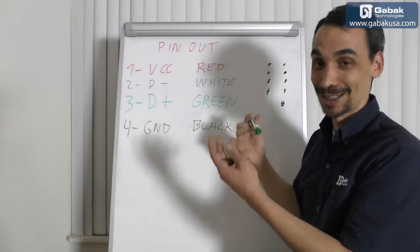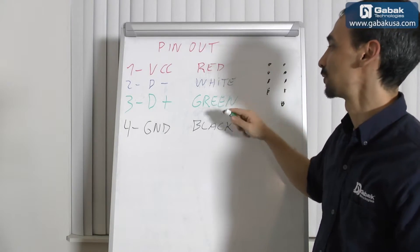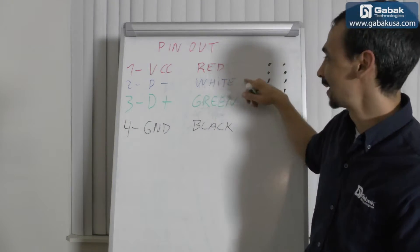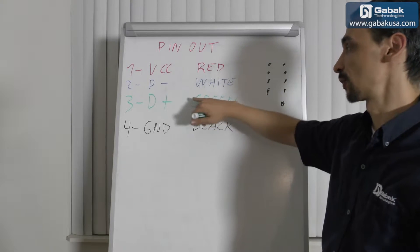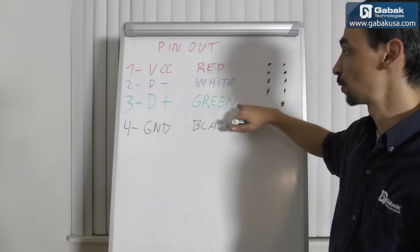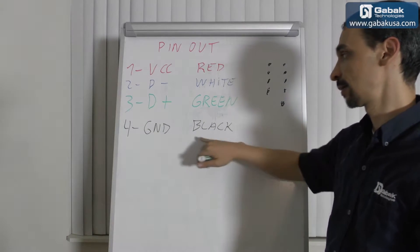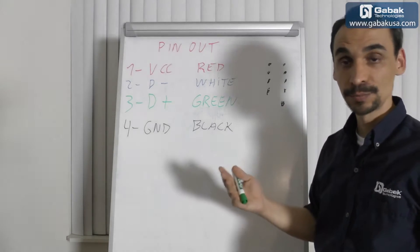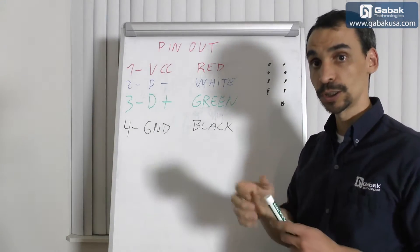Then you have the white one. I don't have a white marker and the whiteboard is white, so of course I cannot use something like that. But this is for the data, and then for the other cable of the data it will be green.